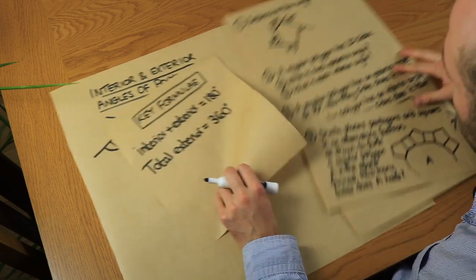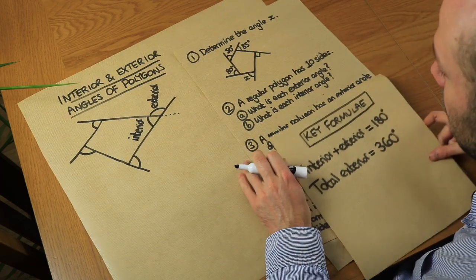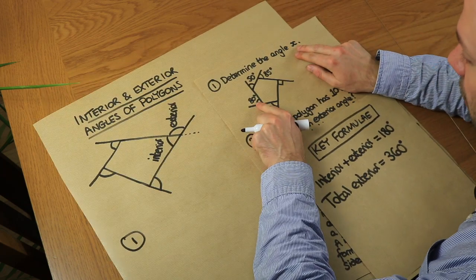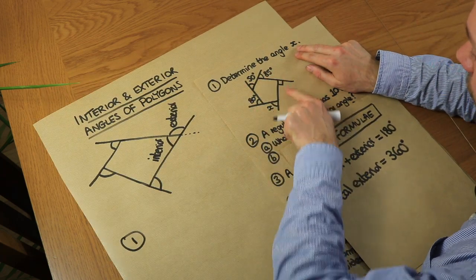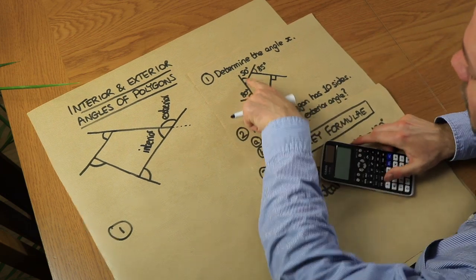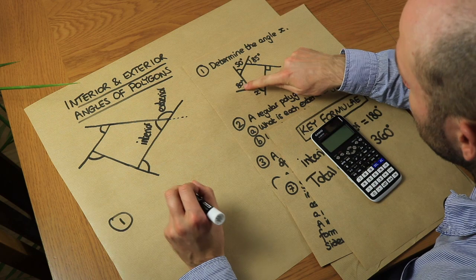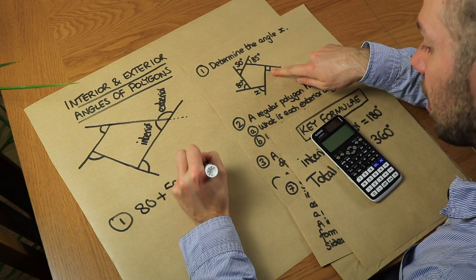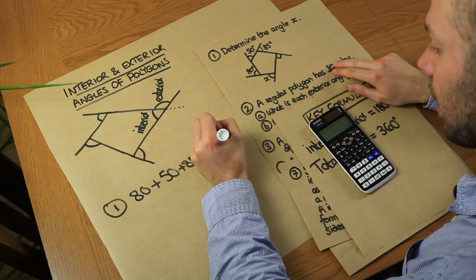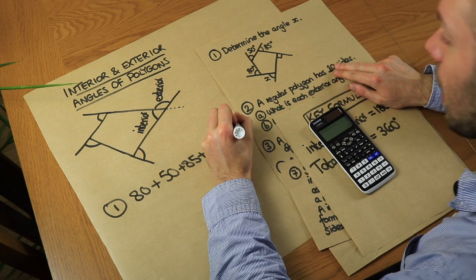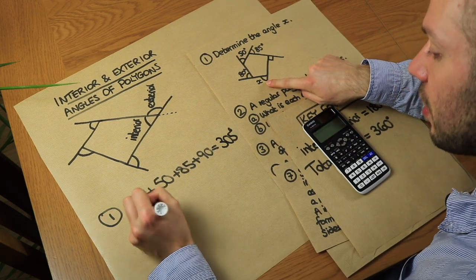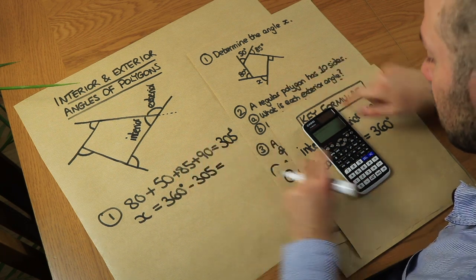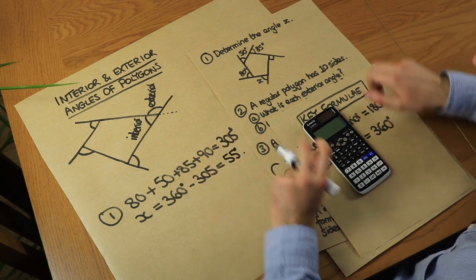Let's use that to solve the first problem. We want to find angle X, given exterior angles of 80, 50, 85, and 90 degrees. We know the exterior angles add up to 360°. Adding the known angles: 80 + 50 + 85 + 90 = 305 degrees. Therefore, X = 360 − 305 = 55 degrees.